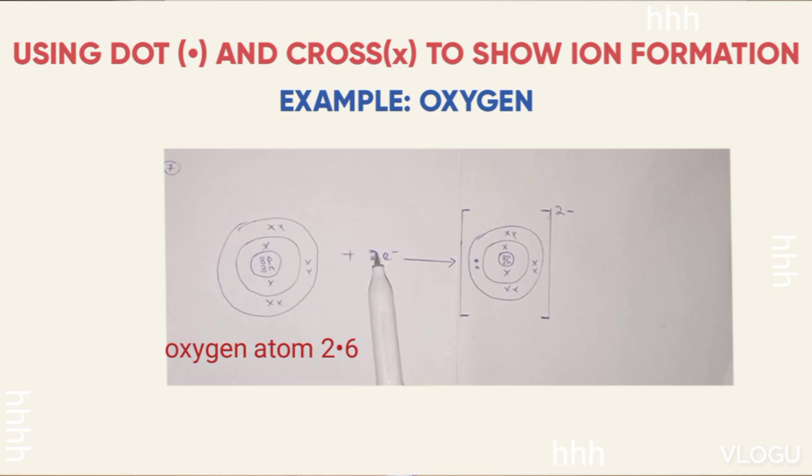And I say plus 2 electrons gained, arrow, I get the ion here. These two electrons here are 2 dots, which are gained, these two. Then the charge is 2 negative because it gains 2 electrons.